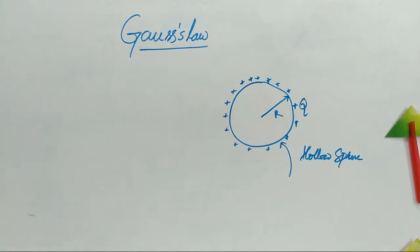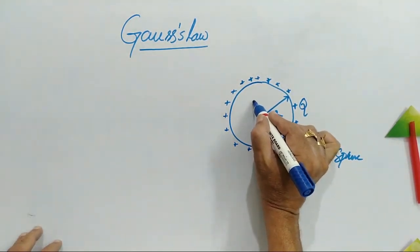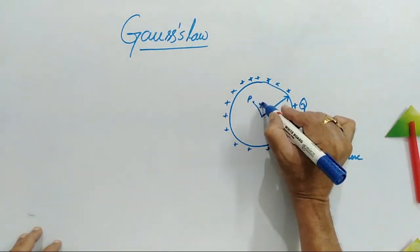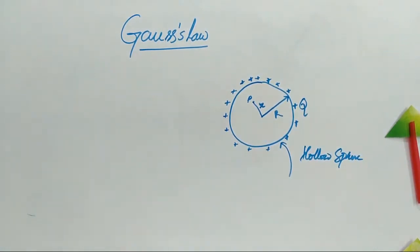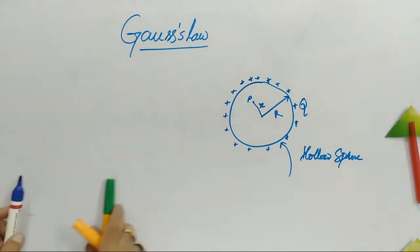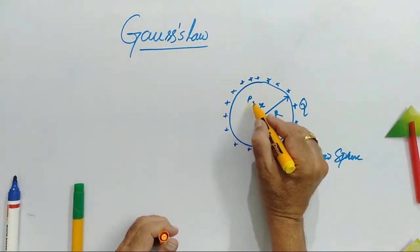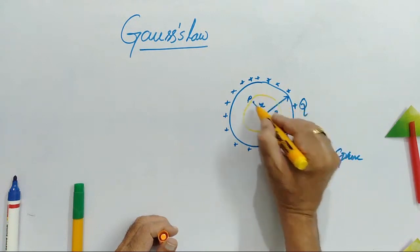Now we will have to do it for three different cases. What are the three different cases? One: outside the sphere. Two: inside the sphere. Three: on the sphere. So wherever you want to find the electric field, the very first step is to draw the Gaussian surface. First, let me begin with the point P of interest at a distance small r units from the center.